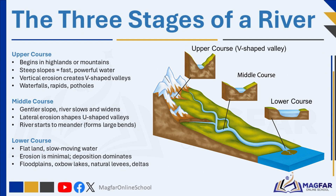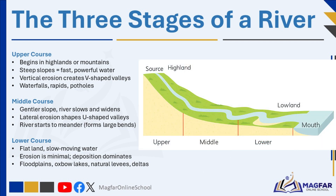As the river enters the middle course, the slope becomes gentler, and the river starts to slow down and widen. Lateral erosion — erosion of the river banks — becomes more dominant than vertical erosion. This causes the valley to widen into a broad U-shape, and the river begins to form large, sweeping bends known as meanders.